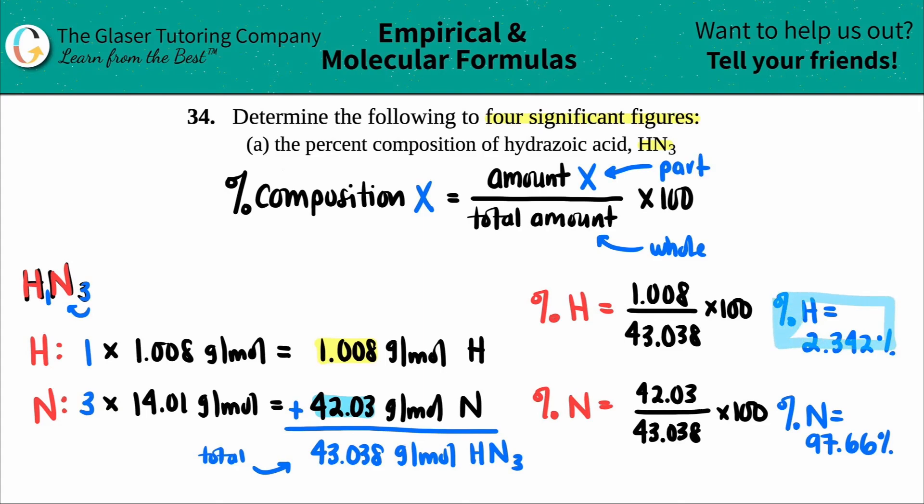So this is the answer for the percent of hydrogen. It's only about 2% of the whole compound. Nitrogen is way more, 97.66%. Crazy.